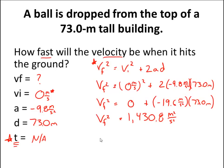Let's finish it off by doing the square root. So the final velocity is going to be the square root of 1,430.8 meters squared per second squared. Let's crunch that number guys.